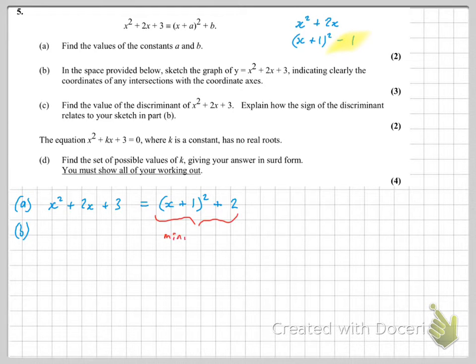Part B. Completed square form tells us where the minimum is. The minimum is at minus 1, 2. And we have that the y-intercept is 3. And so that's enough for us to sketch the curve like so.